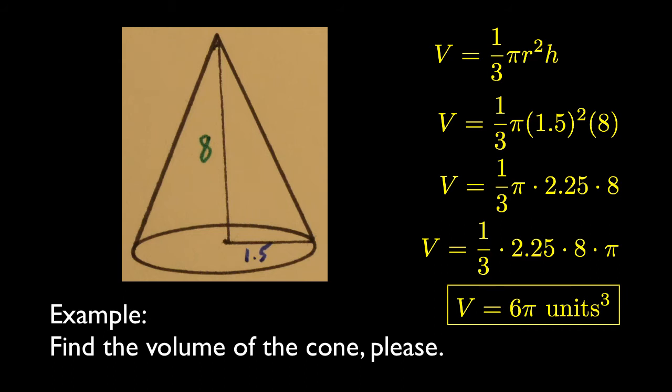Now notice 1.5 squared is 2.25. I can multiply in any order I want, so I'll multiply 1/3 times 2.25 times 8, which gives me 6. I'll tack on the pi at the end to give a final answer of 6 pi cubic units.